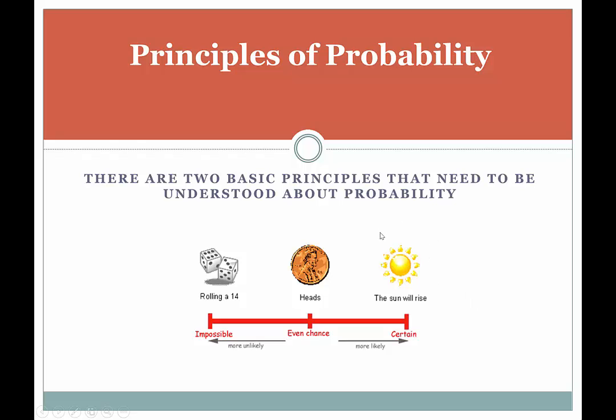There are some events that are certain to occur, and there are some events that are impossible to occur, and then there's stuff in between. So the question is, what would a certain event's probability be? What would an impossible event's probability be? And then what could the events in between those two extremes probabilities look like?